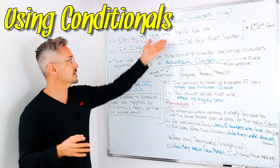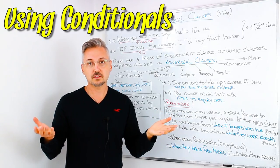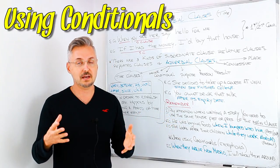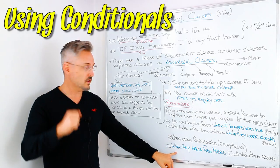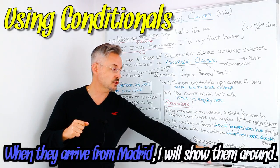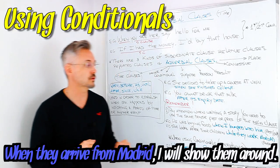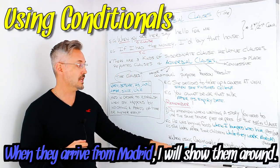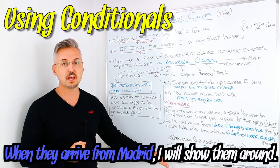When using conditionals, these are the exceptions. For example: 'When they arrive from Madrid, I will show them around.' This is the first conditional — the tenses differ, which is the exception to the same-tense rule.